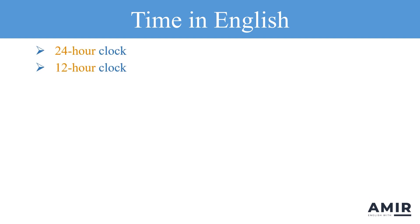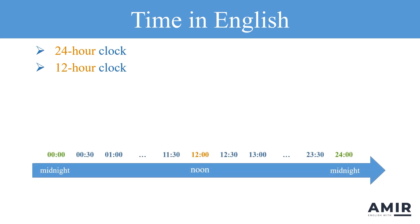In the 24-hour clock, time starts at 0 and goes up to 24. For example, if it's midnight on Friday, the time is 0, and by the end of the day it's 24. You can also say 0 on Saturday instead of 24 on Friday. However, in most English-speaking countries, the 12-hour clock is more commonly used.